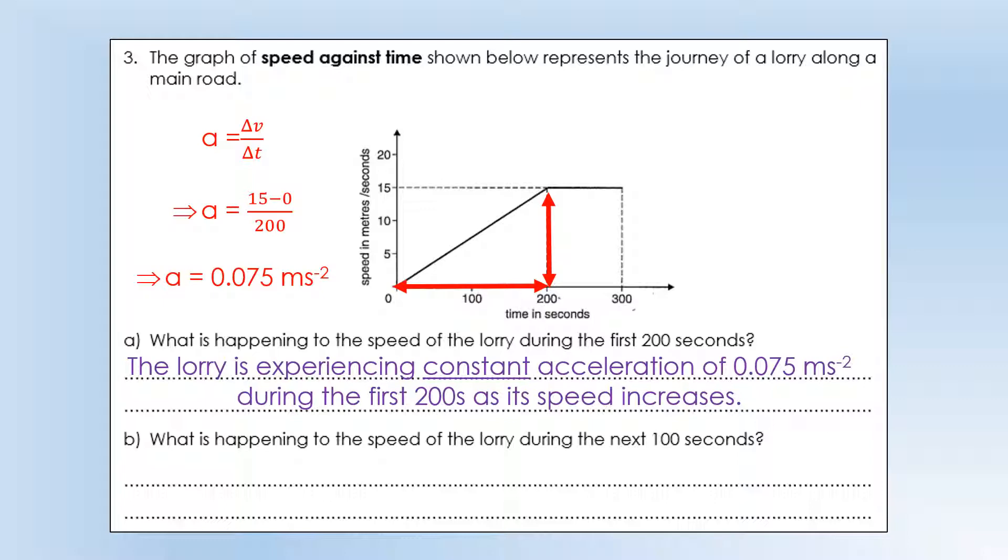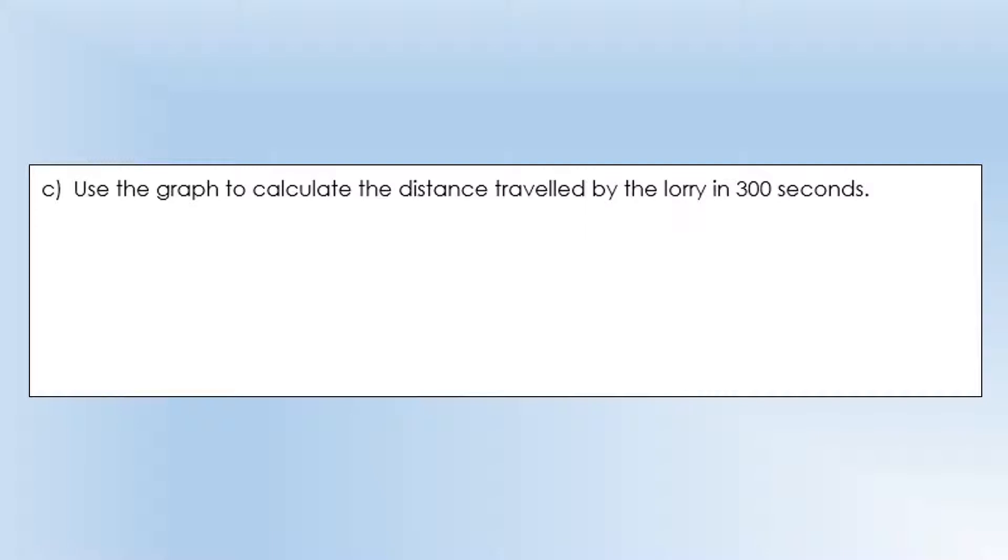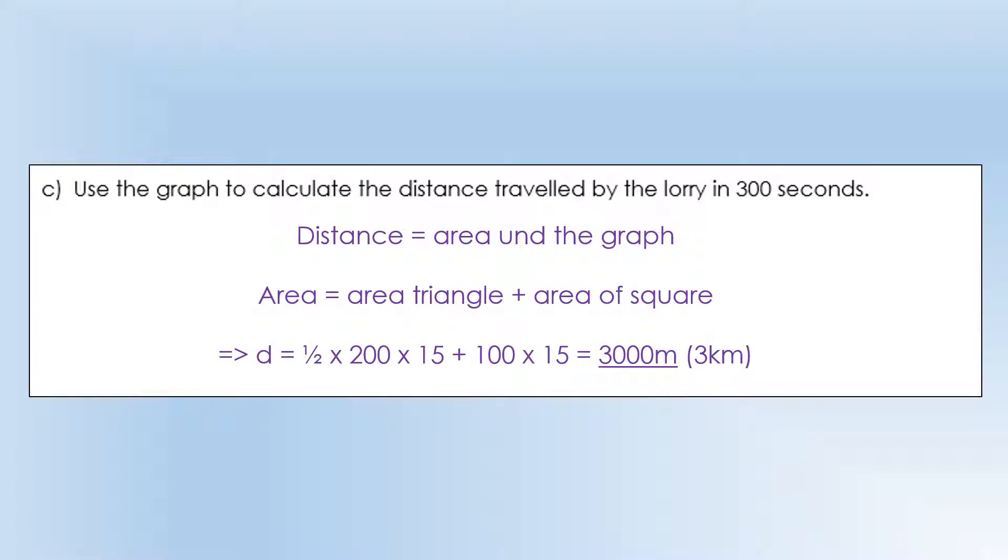What is happening to the speed of the lorry during the next 100 seconds? It stays constant at 15 meters per second, or its acceleration is 0. With these questions, I'm trying to be very specific about what the values are. Use the graph to calculate the distance traveled by the lorry in 300 seconds. I'm going to find the area under the graph. We've got a triangle and a square we need to add together. The area of the triangle plus the area of the square gives us 3,000 meters.